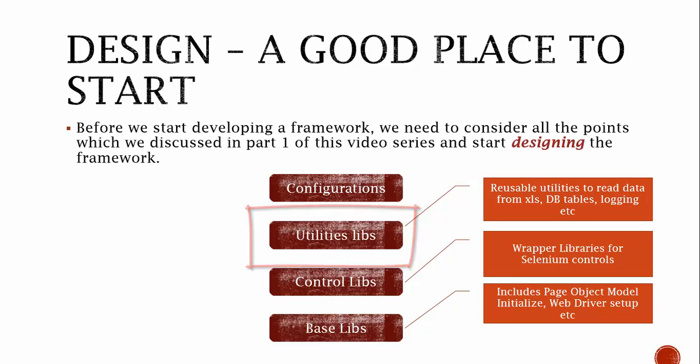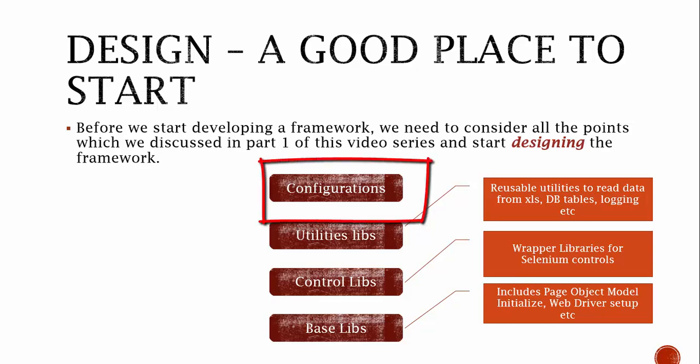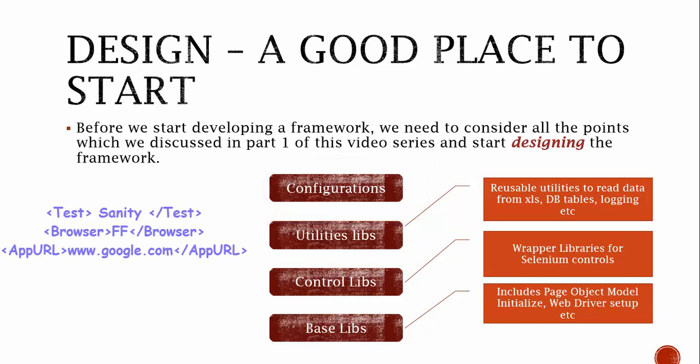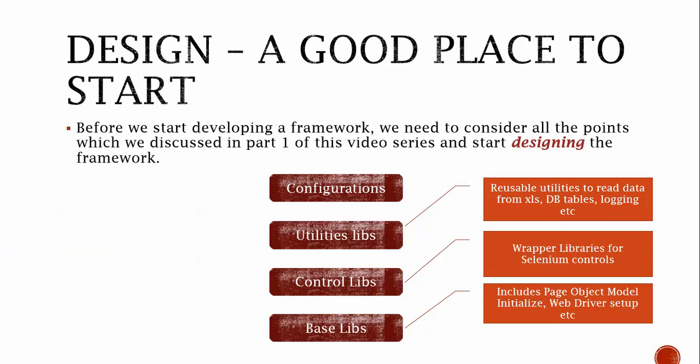The utility libraries are something which can be used across our framework, like reading data from Excel sheets, database tables, and logging data. The configuration files are used across the framework and specify things like which test to run — sanity test, which web driver to use — Firefox, or the URL of the application. This is a bird's-eye view of our framework design, so keep all these things in mind as a reference while designing our actual framework.